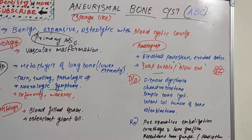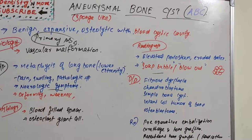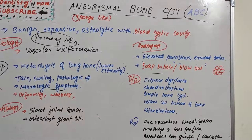Complications of ABC include pathological fracture, neurologic symptoms due to nerve involvement, and mechanical disruptions. In summary, Aneurysmal Bone Cyst is a sponge-like lesion present within the bone, most commonly in long bones of the lower extremities, pelvis, and vertebrae, resulting from vascular malformation causing a sponge-like cystic cavity. Thank you for watching; a new topic will be covered in the next session.